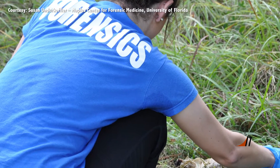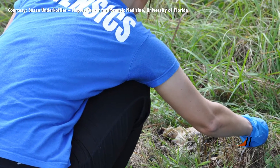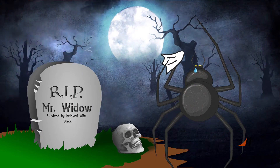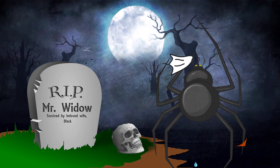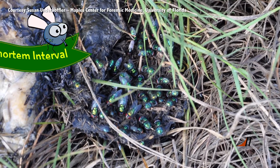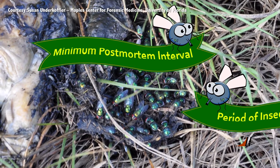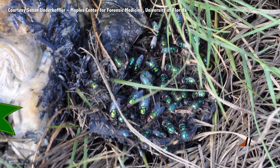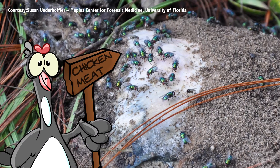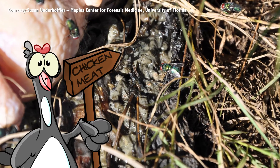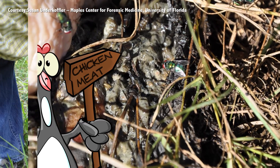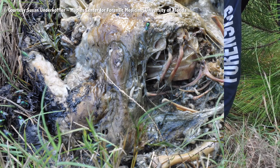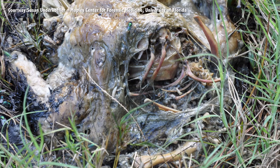Forensic entomology is the study of insect biology and its application to criminal cases. Despite what you may have seen on television and movies, forensic entomologists do not estimate time of death. They do, however, provide estimations of the minimum post-mortem interval, or more specifically, the period of insect activity. They focus on the age of the insects collected from remains at a crime scene. Then, depending on the species and location of the activity, the entomologist determines whether or not colonization occurred post-mortem — helping to determine the stage of decomposition.